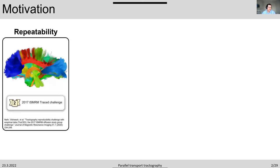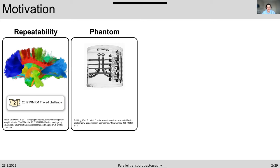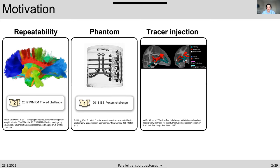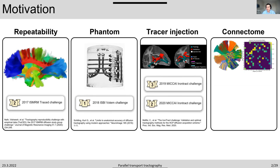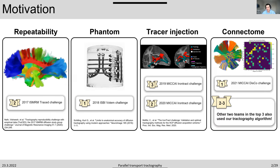The 2017 challenge focused on repeatability and we ranked number two. In 2018, that was a phantom challenge and we won. In 2020, we had the tracer injection challenge; in the first round in the DSI category we were number three, and in the second round we were number two. Last year in the ConnectOM challenge, our pipeline ranked number one. The most rewarding aspect was that the second and third ranking teams also used our approach, showing our techniques are getting more popular.